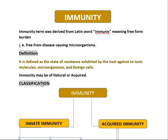Immunity can be acquired or it can come naturally — by birth or during your lifetime. This classifies immunity into two major types: innate immunity and acquired immunity. Innate immunity is the natural immunity you acquire by birth, while acquired immunity, also called adaptive immunity, is obtained during your lifetime after birth.